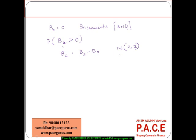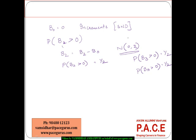So B2 follows a normal distribution with mean 0 and variance 2. Because the mean is 0, there is an equal probability that the value is positive and the value is negative. So directly I can say that the probability that B2 is greater than 0 is equal to half. The same will be the case for any time: the probability that B3 is greater than 0 is also half, because there is an equal chance the value would be either greater than 0 or less than 0.